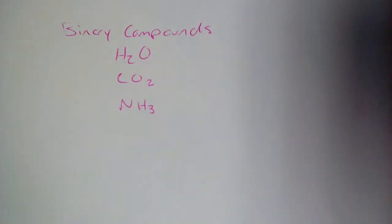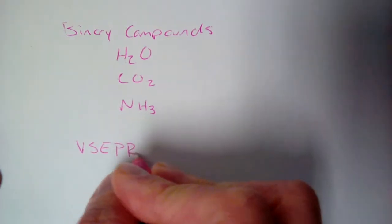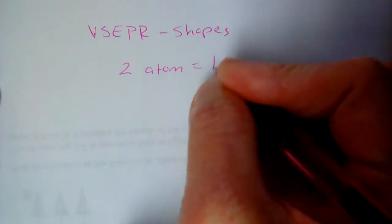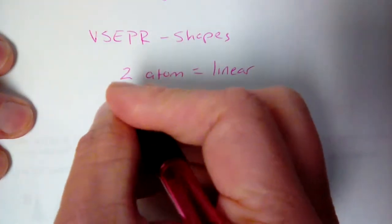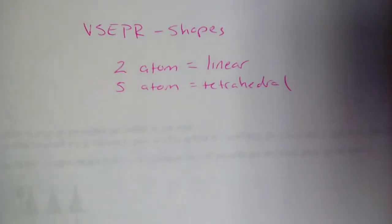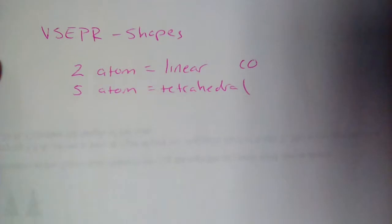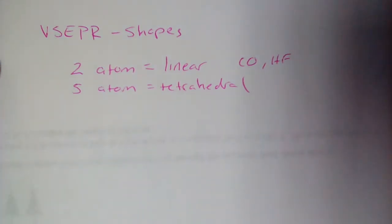When you're dealing with these binary compounds, there are shortcuts we can apply when it comes to VSEPR and shapes. Two-atom molecules are automatically linear — there's no other way to put them together. You set them up in a straight line. So whenever we see a two-atom formula like carbon monoxide CO or hydrogen fluoride, we know it's going to be linear.